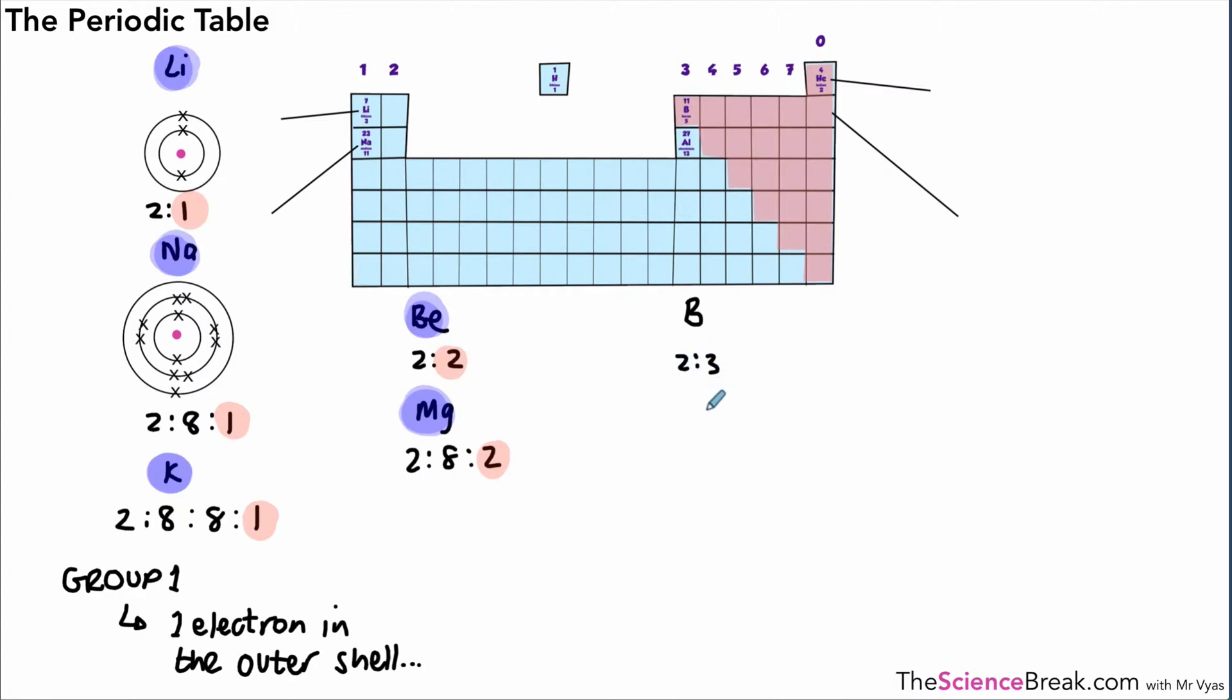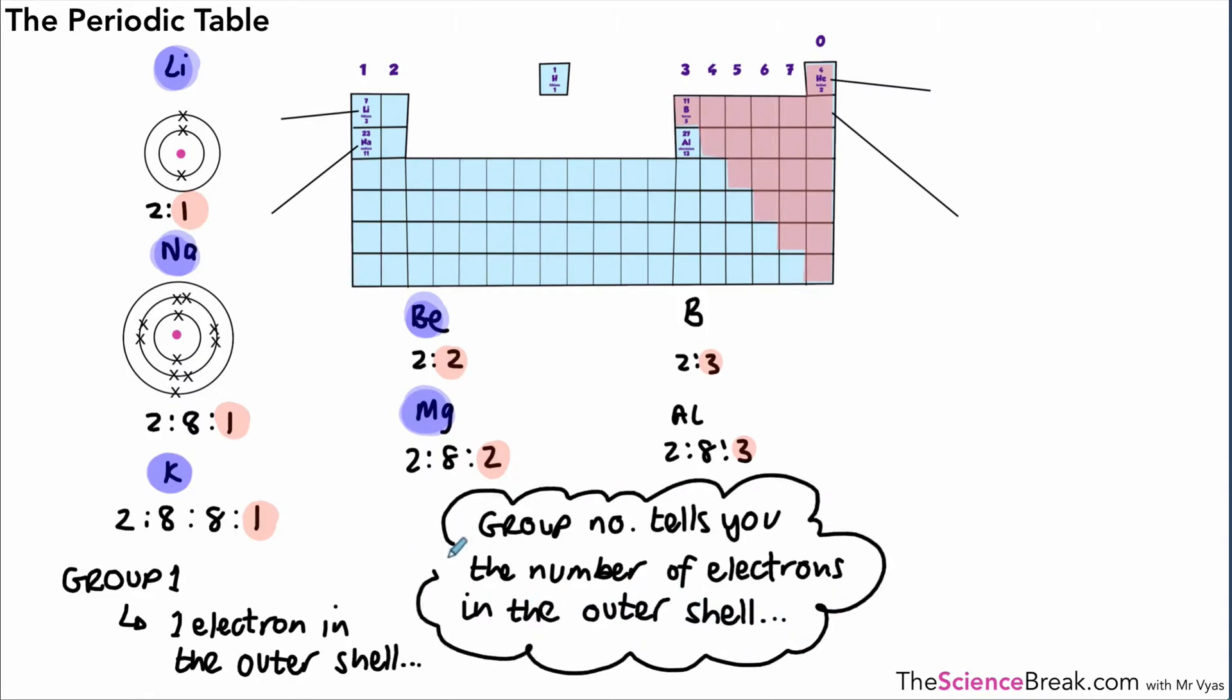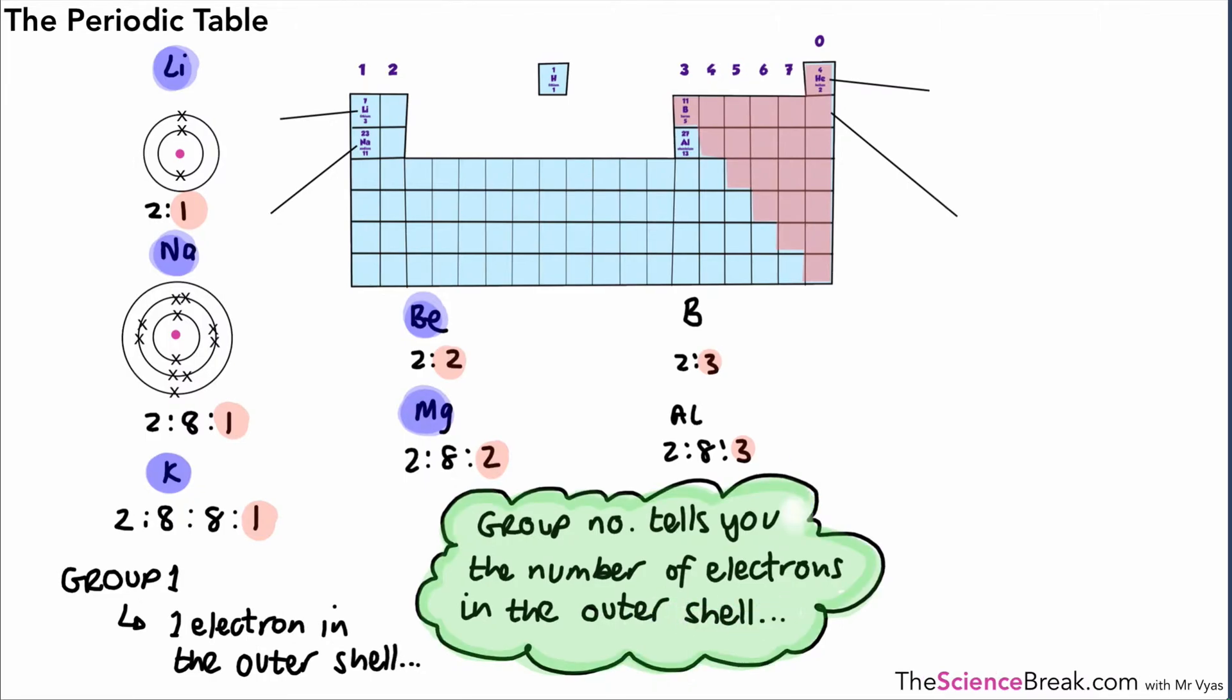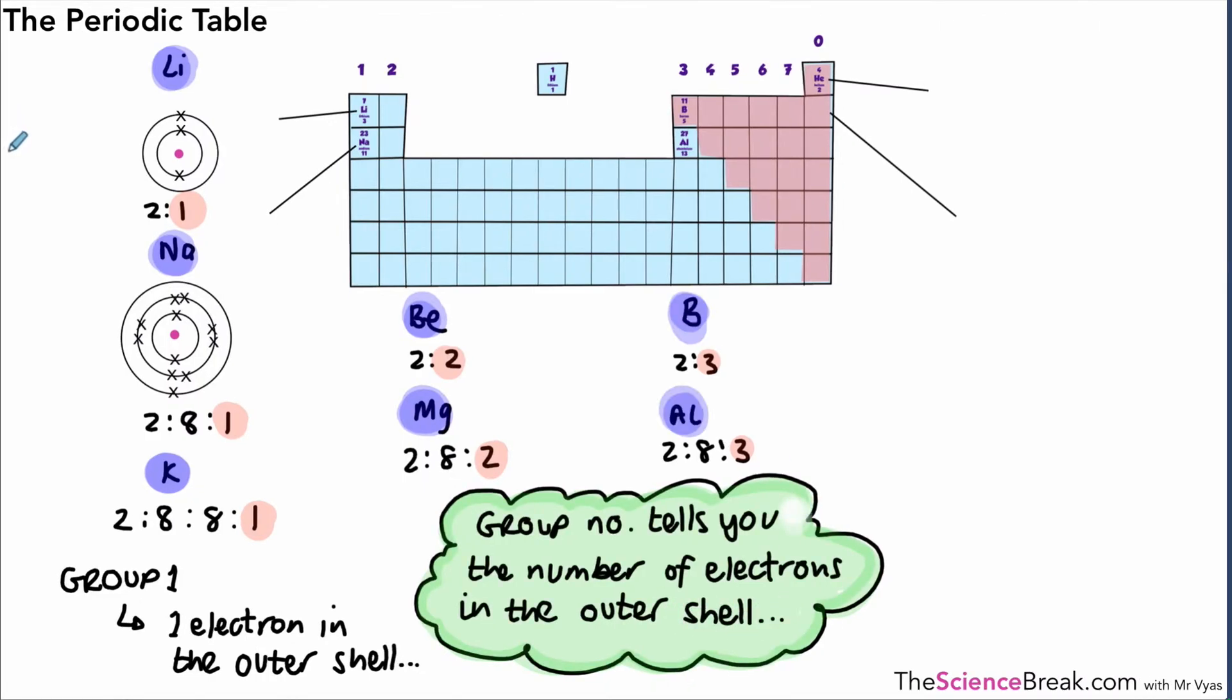Let's quickly have a look at boron. That's 2, 3. Next one down is aluminum, and that's 2, 8, 3. So atoms in group 3 have 3 electrons in the outer shell. A very important point here is that the group number tells you the number of electrons in the outer shell of the atoms of that element. This is a very important point, so we will highlight it brightly in green. The group number tells you the number of electrons in the outer shell.